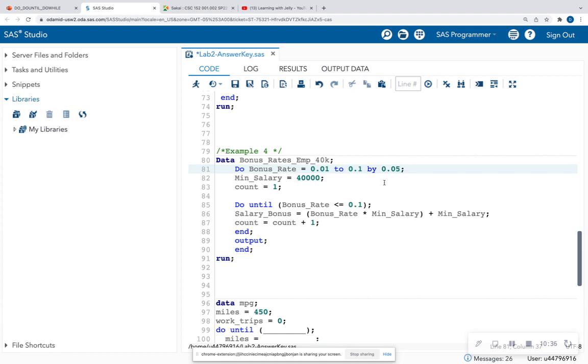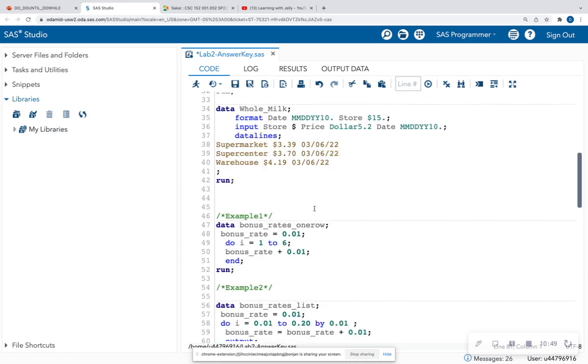I can increment by 0.05. I can increment however I want to increment in my do loop. So this is what our nested do loop does.